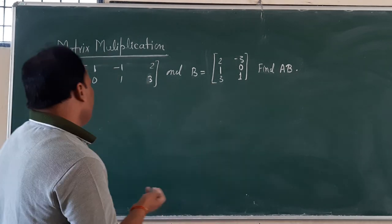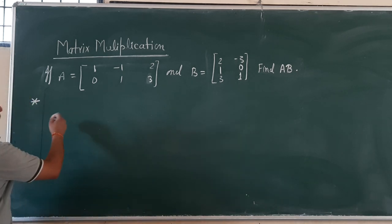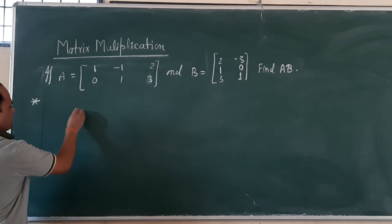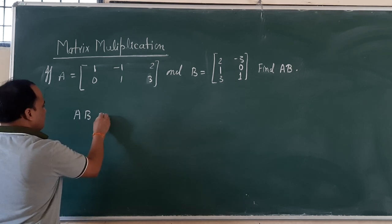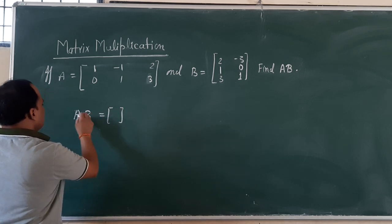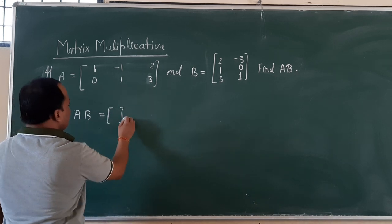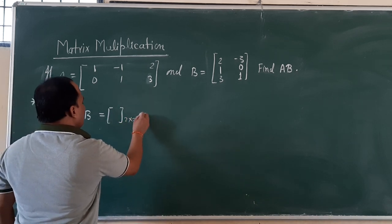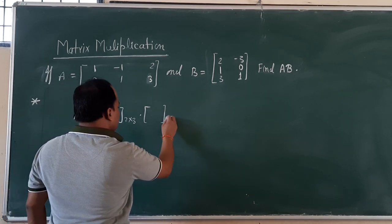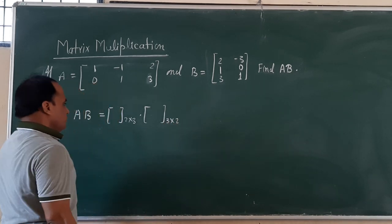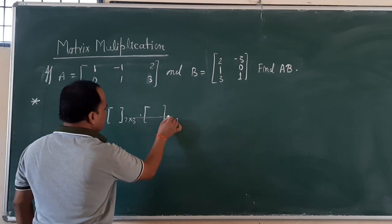Let us see how we are going to find it. First of all, we write AB. Here we just check the order of conformability. The first matrix is of 2 cross 3 order and second one is of 3 cross 2. So this 3 matches with this 3.